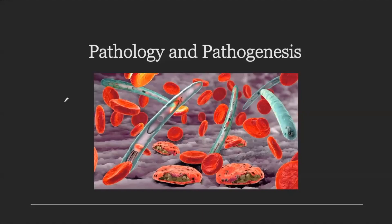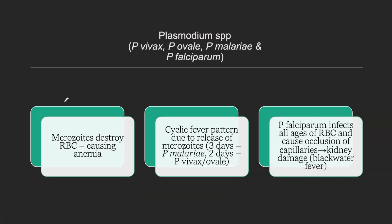Let's cover the most important pearls about pathology and pathogenesis. Why is there anemia in malaria? It is the merozoites which destroy the RBCs, leading to anemia. Why is there fever with a cyclic pattern? It is because of the release of the merozoites — three days for malariae, two days for both vivax and ovale. The variable release of merozoites explains the cyclic fever pattern.